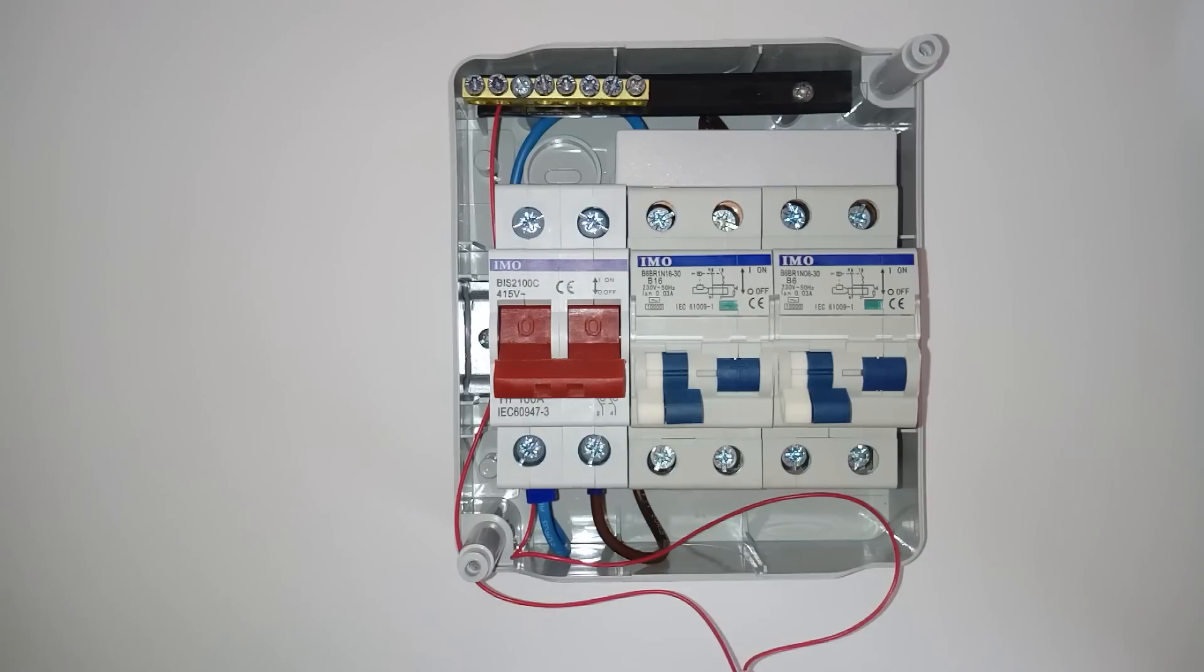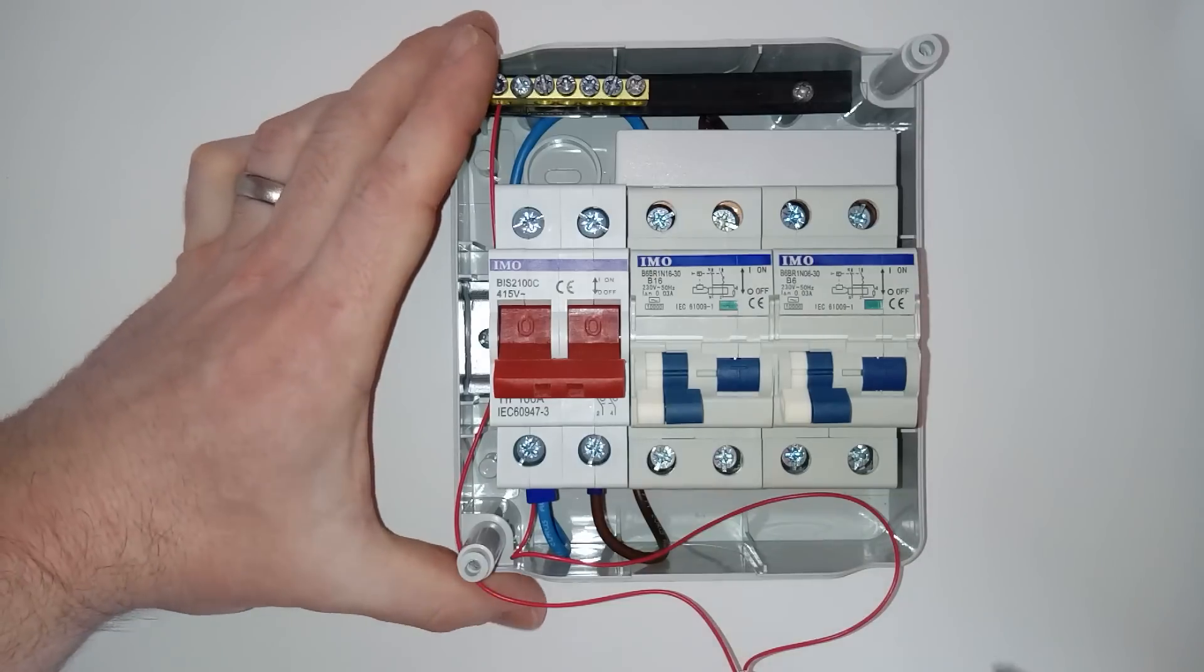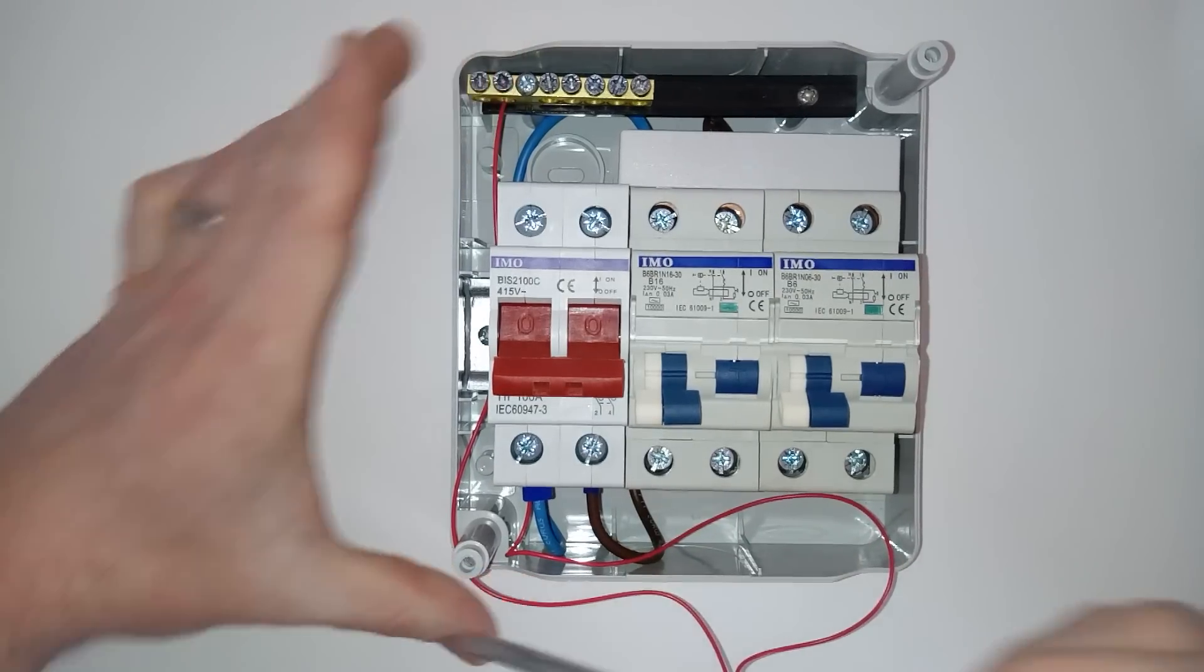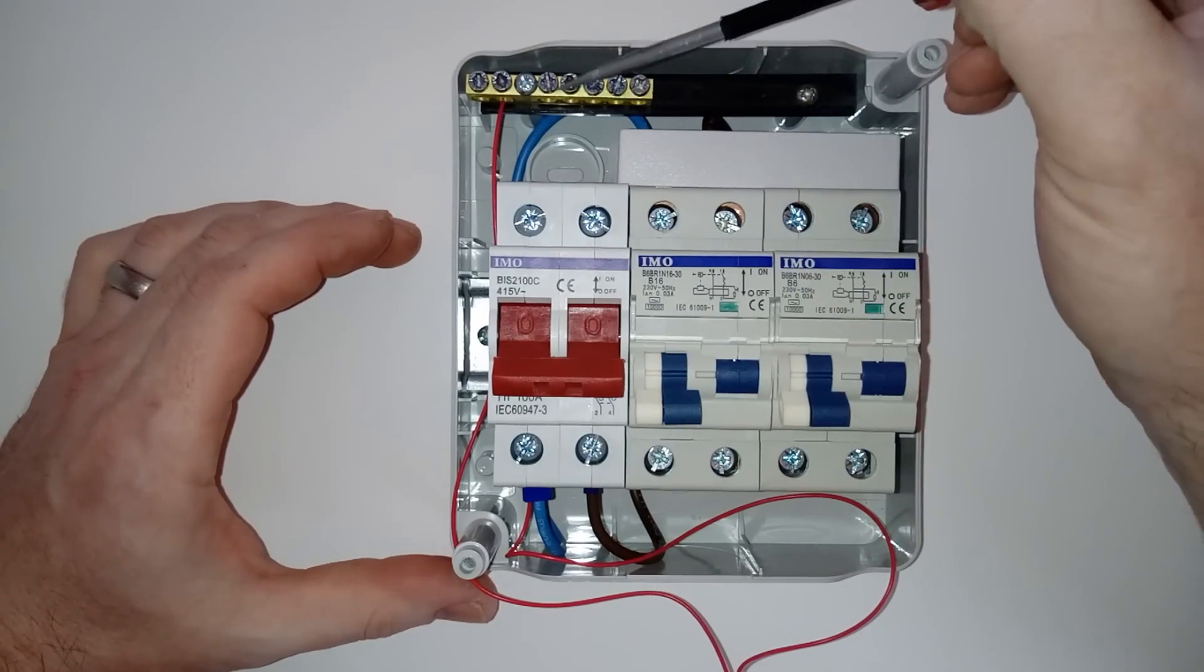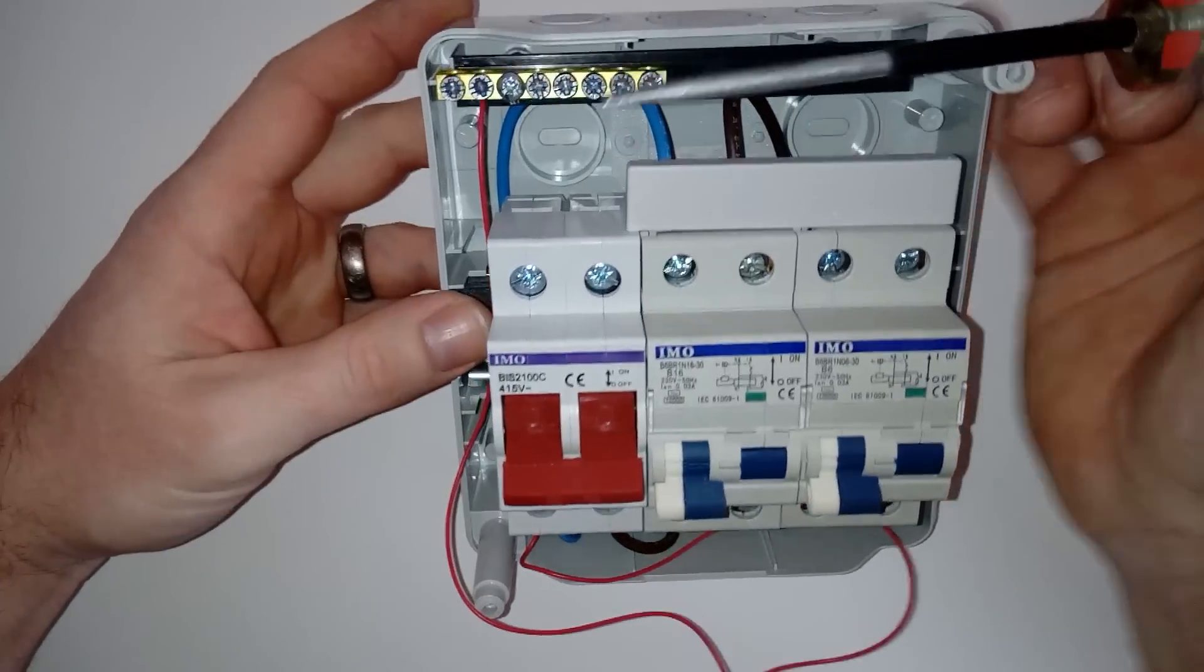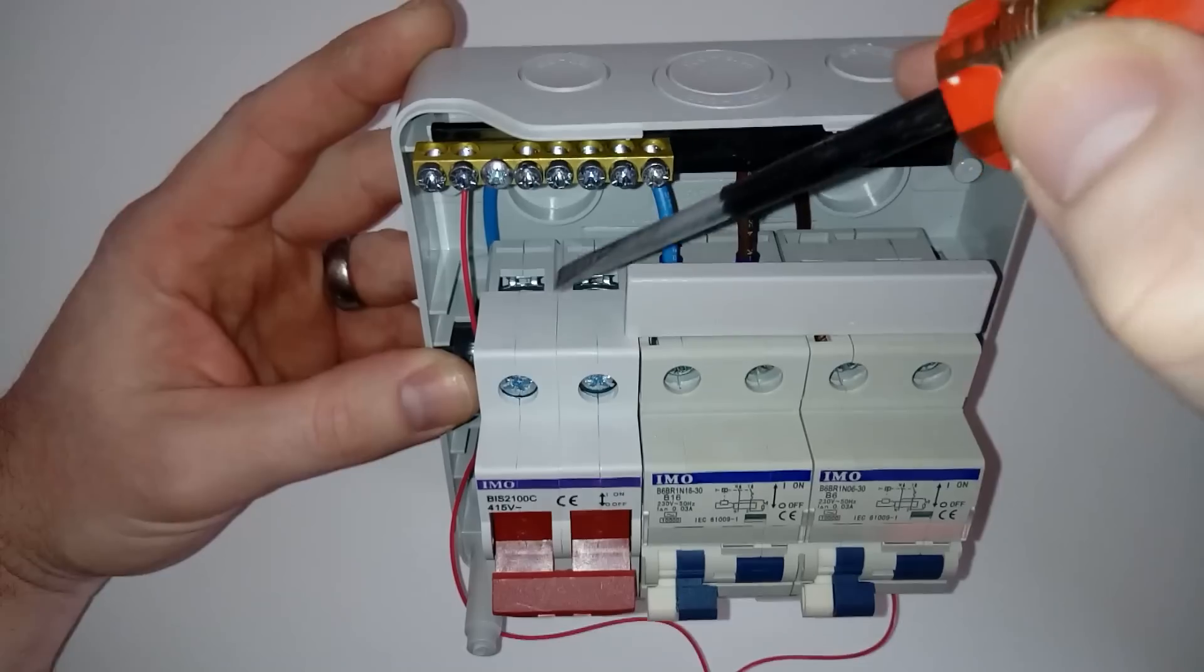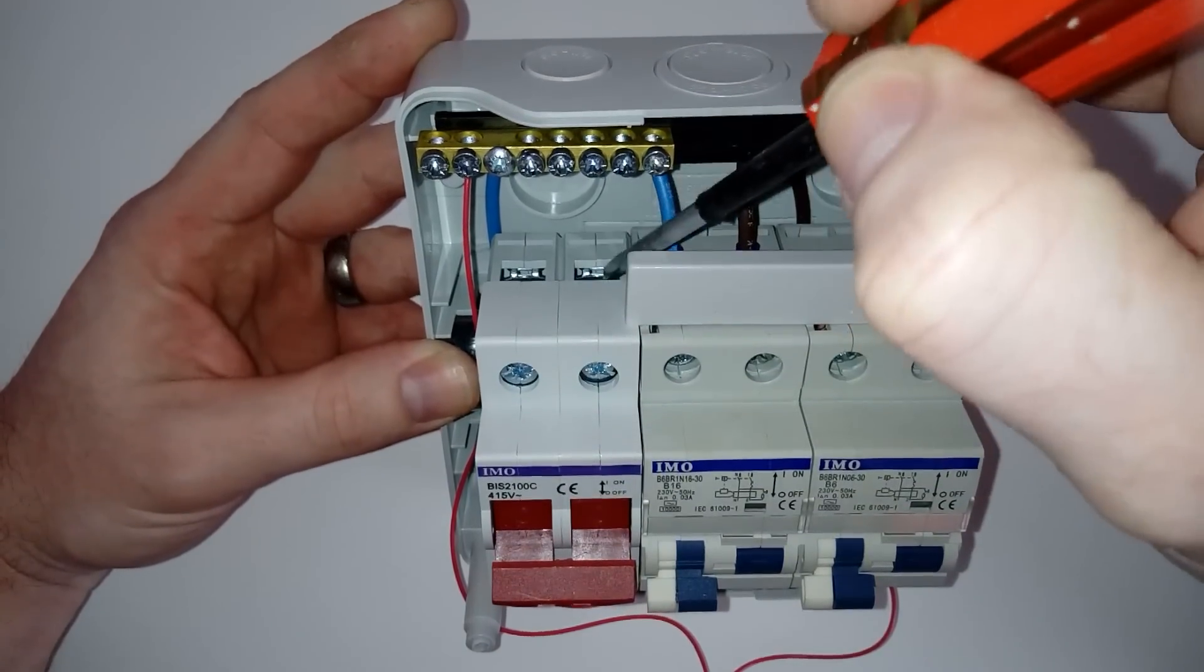So when you bring your main feed in, you're going to bring it, whether it's the top or the bottom, you're going to bring your earth wire straight up into here and then you've got two points there and there, and then your main feeds in.